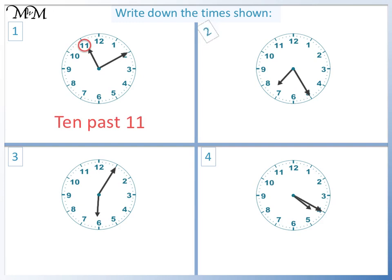Question 2. The minute hand is pointing to 5. 5 times 5 equals 25, so 25 minutes past. The hour hand has moved past 7, so the time is 25 past 7.